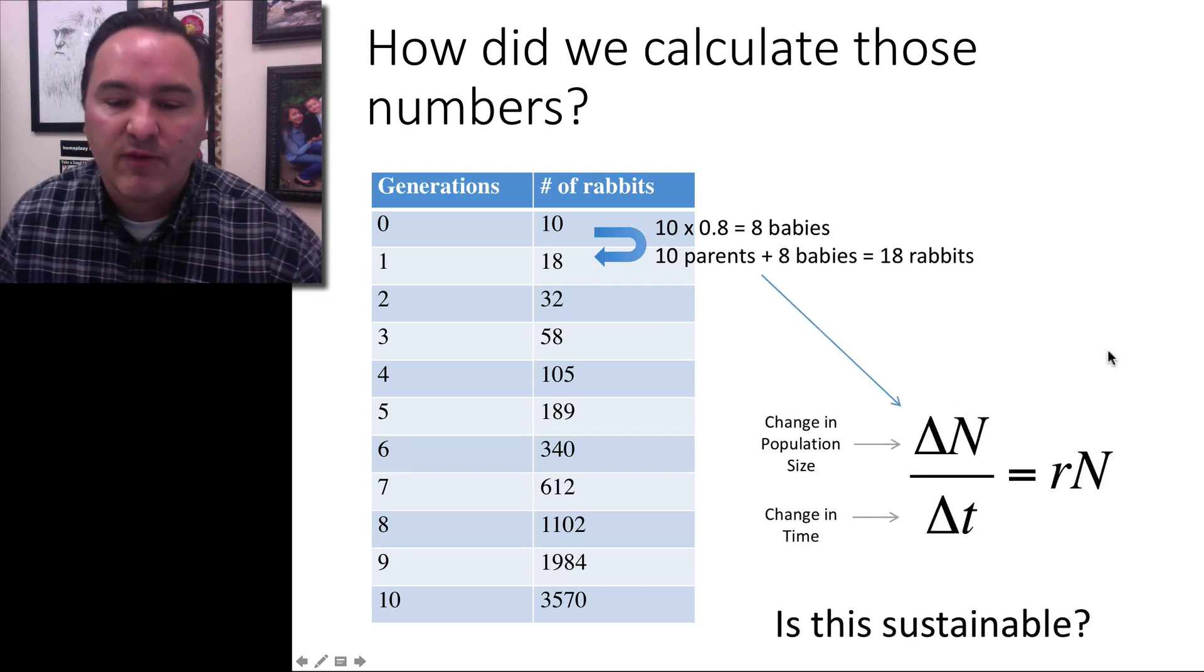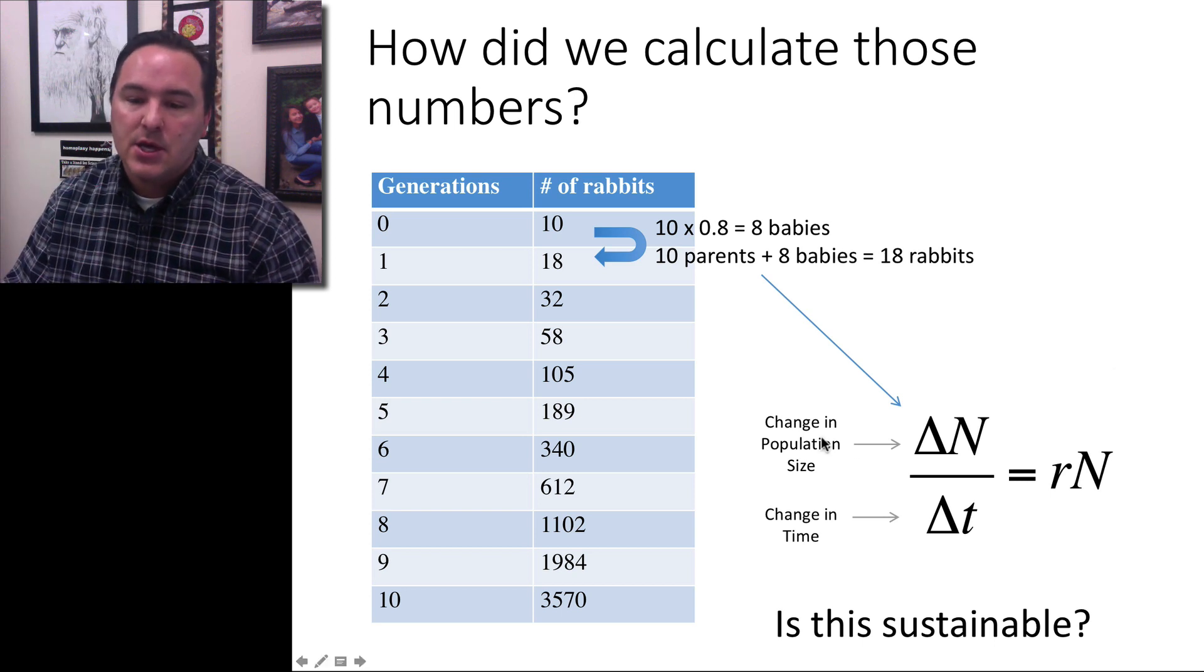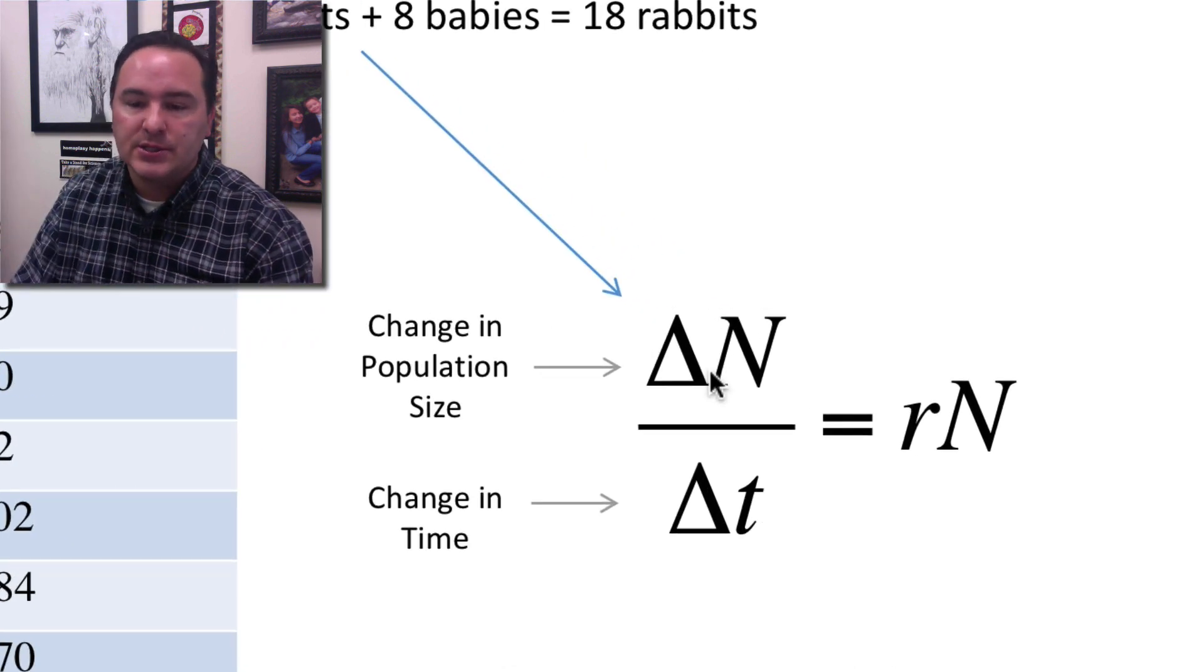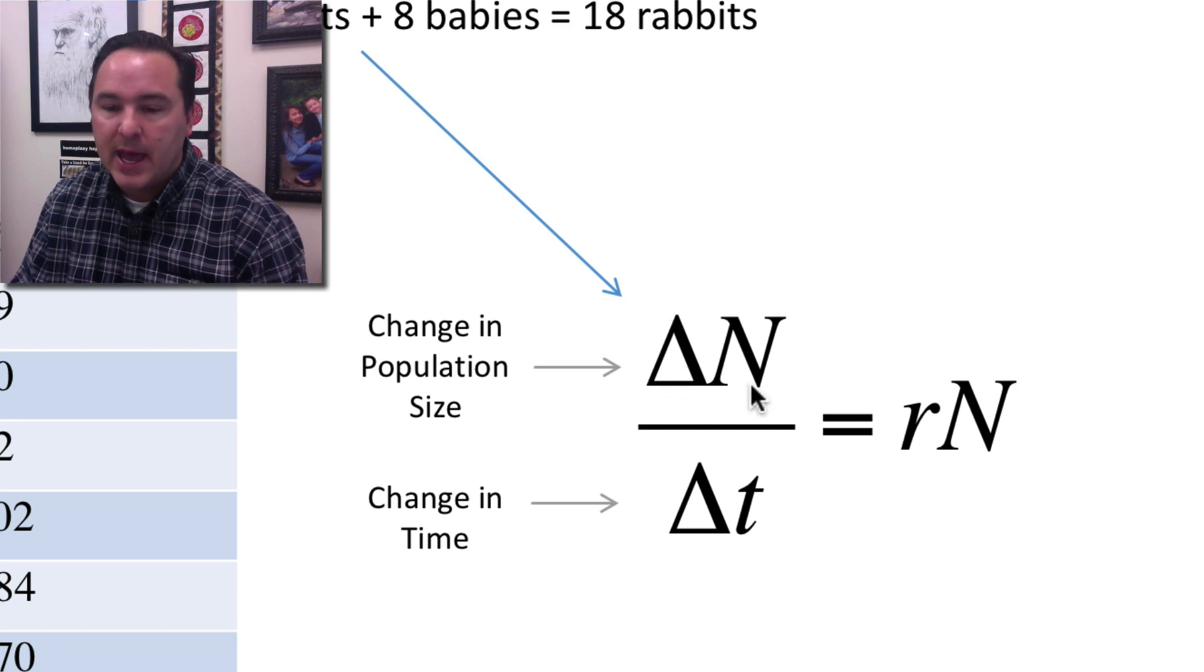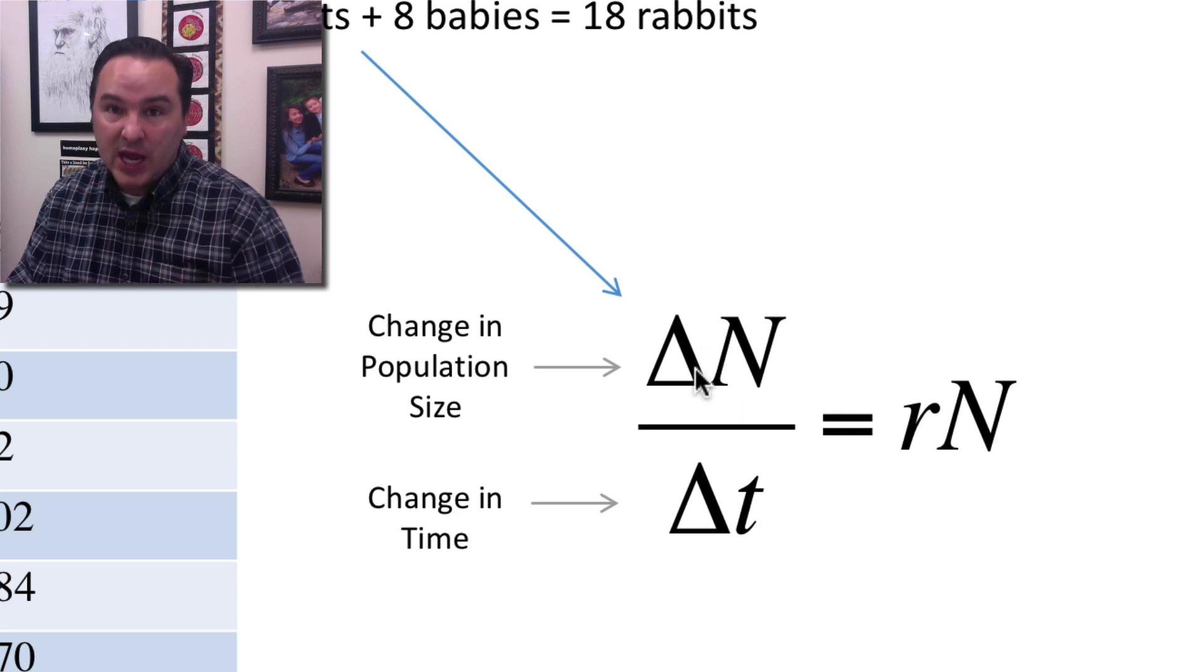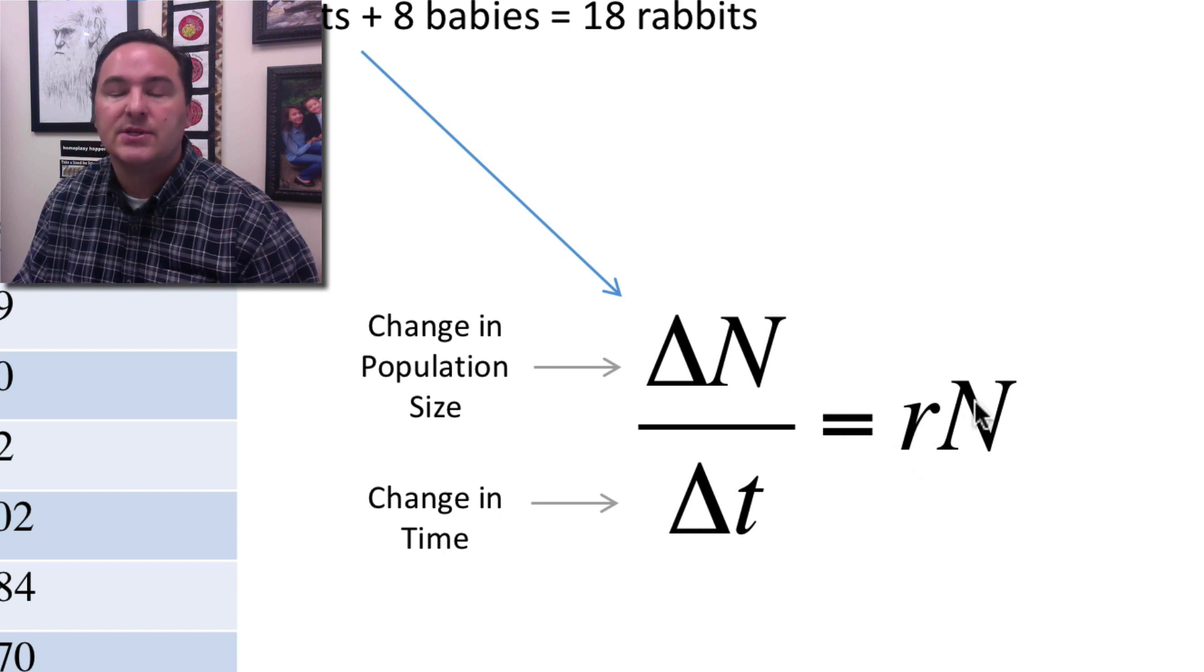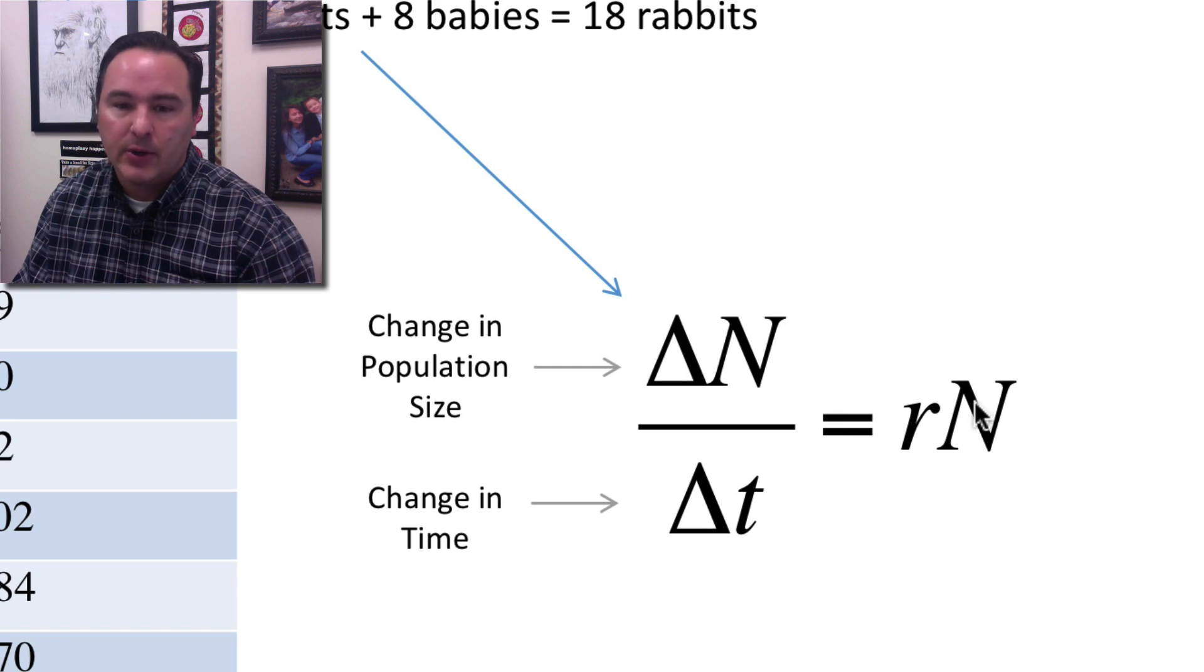We've now come up with a general formula for how to calculate from one generation to the next. In order to calculate the change in a population from one generation to the next, delta here is the change in the big N, which is the population. Change in the population over the change in time. The change in the population from one generation to the next equals the rate times the current population. That's how you can figure that out.